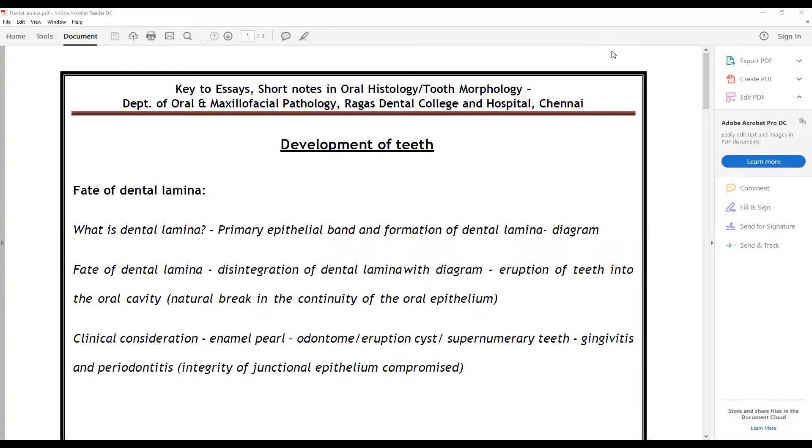You have to talk about the primary epithelial band formation of dental lamina, perhaps with the help of a diagram. A line diagram would be helpful.